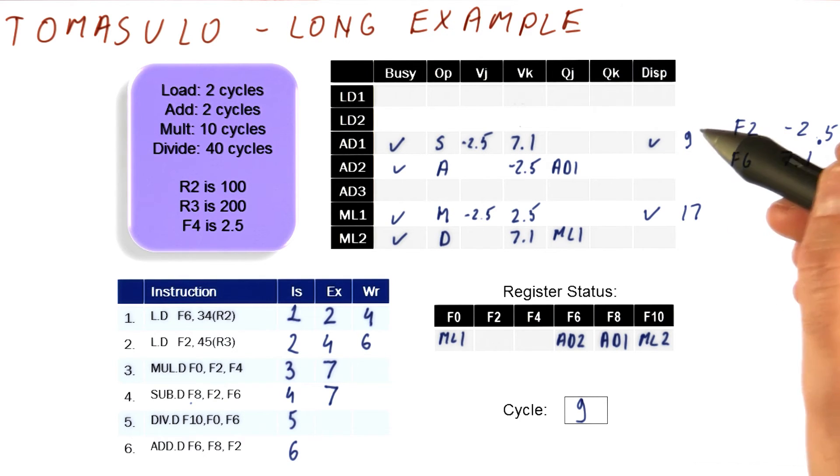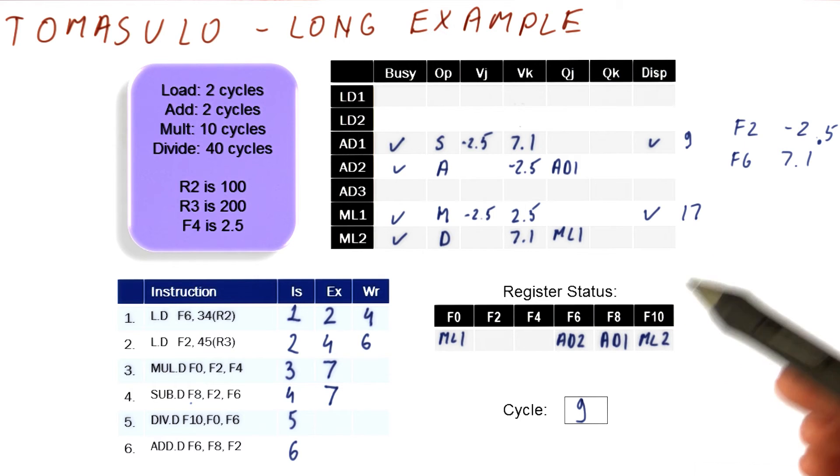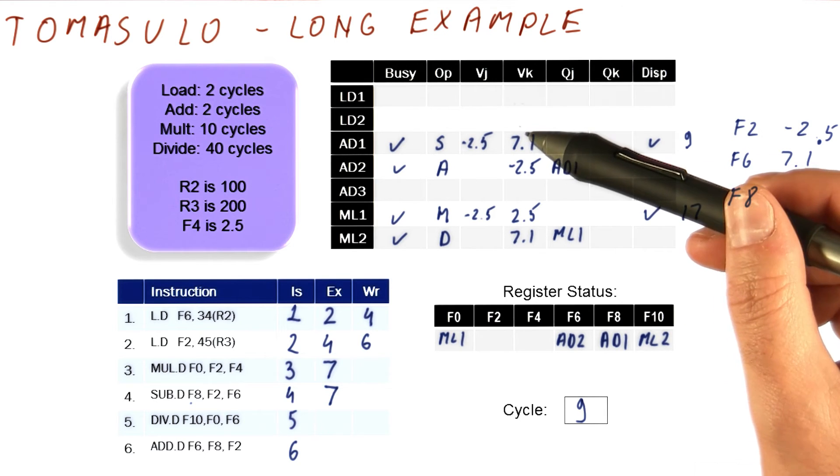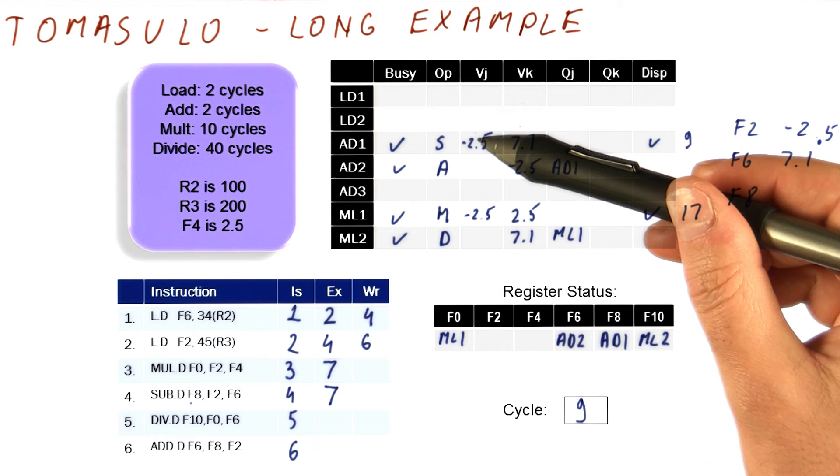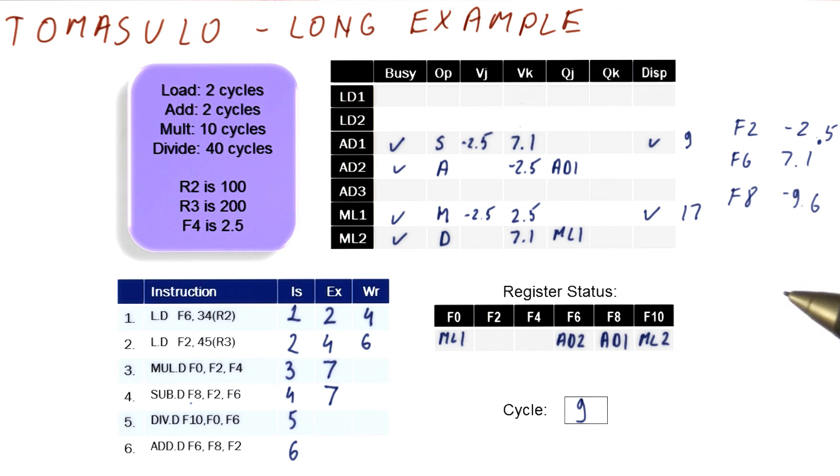So what's now going to happen is this subtract is going to find the register that matches its tag, which is F8. Write the value to F8, and the value is going to be minus 2.5 minus 7.1. So it's going to be minus 9.6.